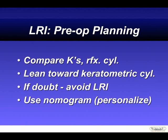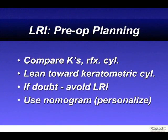When it comes to planning, we compare the Ks, the refractive cylinder, corneal topography, and any other elements to decide how much astigmatism is present. We tend to lean toward the keratometric cylinder; we're currently using the IOL Master Version 5, which has better keratometry as our primary source for planning LRIs. But if the measurements don't compare well across different systems for that patient, we typically will not do an LRI at the time of surgery and will look for any problem astigmatism afterward to treat post-operatively.